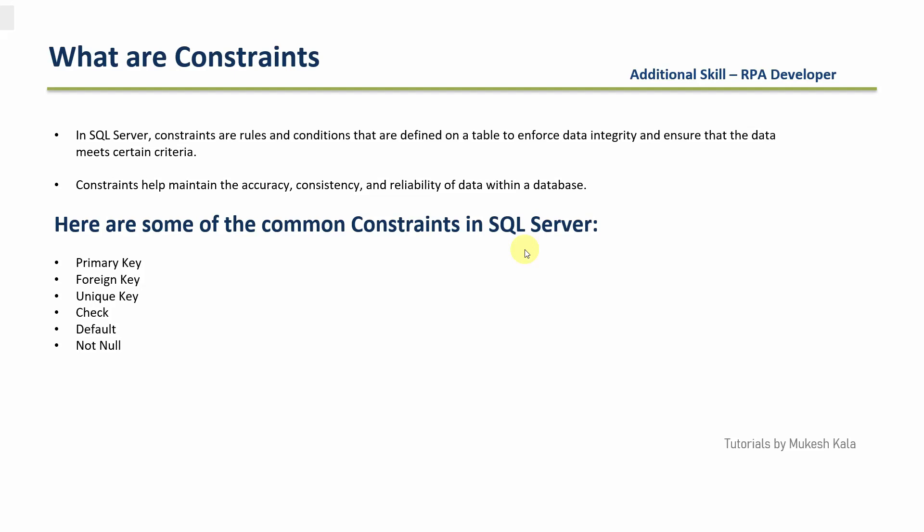To get started — just a quick recap — constraints are the rules and conditions that are defined on the table to enforce data integrity and ensure that the data meets certain criteria. In other words, in case I am creating a table and I want my data to follow certain rules, certain regulations, I want the data to be accurate, consistent and reliable, I use something which is called database constraints. When we talk about constraints, we have different types available; the common ones are: primary, foreign, unique, check, default and not null.